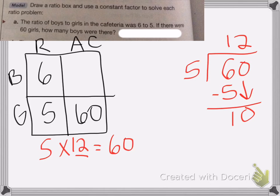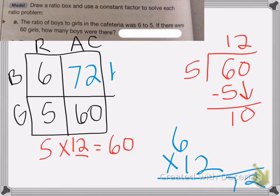Okay? So 6 times 12 is equal to 72. Okay? So the actual count of the boys is 72 boys. And that's my answer.